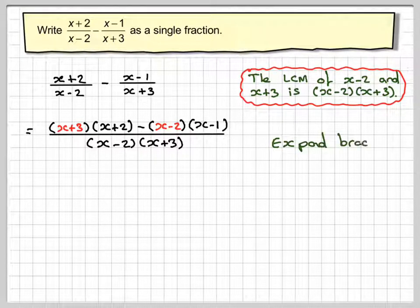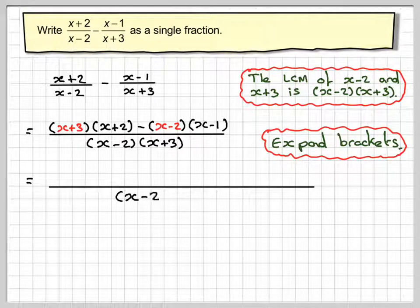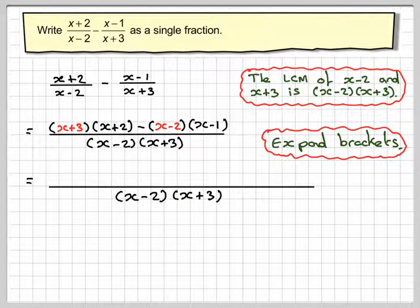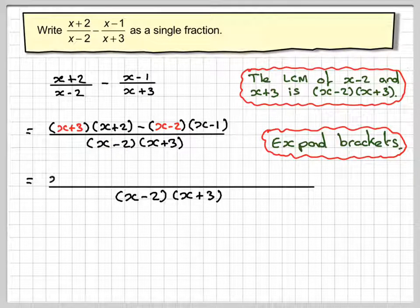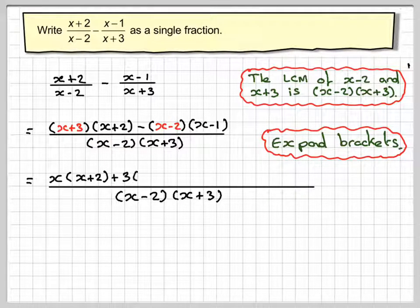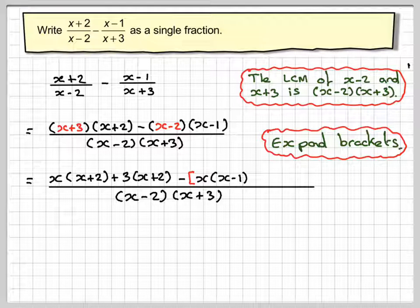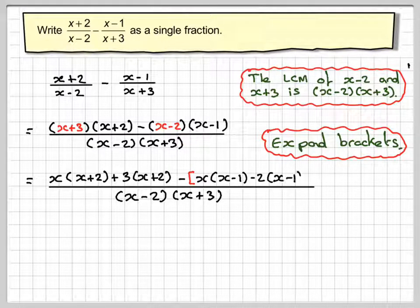Now we have to expand the brackets in the numerator. So we're going to make quite a long line here now. So we're going to do x times x plus 2 plus 3 times x plus 2 minus... Now we need to introduce some more brackets. So we introduce this big square bracket here. x times x minus 1 minus 2 times x minus 1 and close that bracket off.